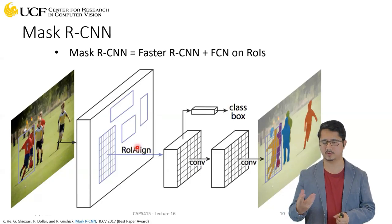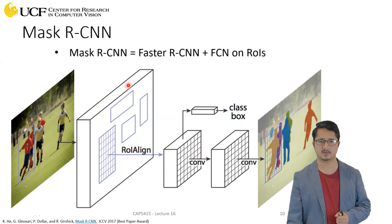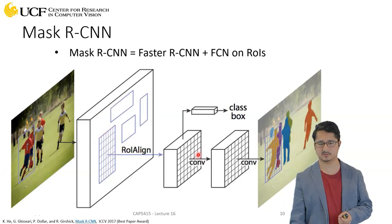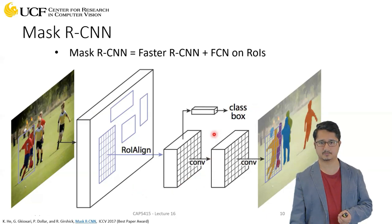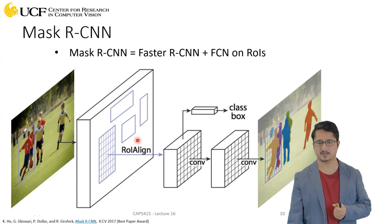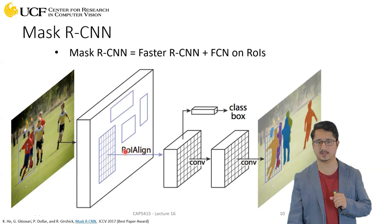Let's understand how Mask RCNN extends Faster RCNN. In Faster RCNN, given an image, the RPN gives proposals, then ROI pooling is applied on top of each proposal to extract features, and these features are used for classification and bounding box regression. In Mask RCNN, instead of ROI pooling, we have ROI Align — which we will discuss in more detail today.